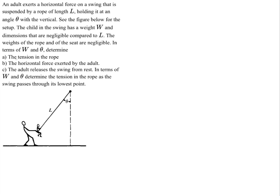In terms of W and theta, determine the tension of the rope. Let's start by drawing a free body diagram for the child on the swing. There is going to be a force of tension preventing him from falling off the swing, gravity pulling him down, and the adult is pulling him back with a horizontal force — I'm just going to call this force F, the force of the adult's pull.